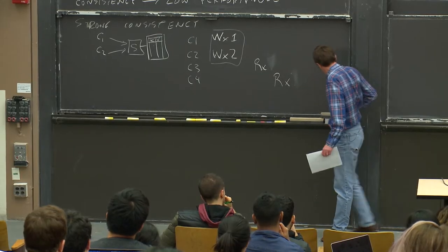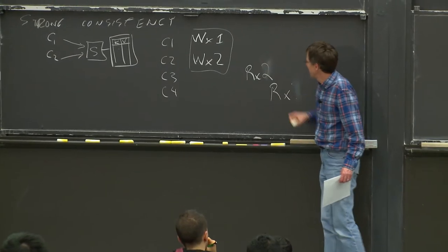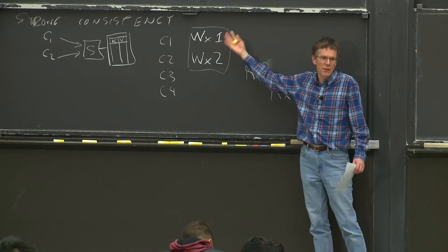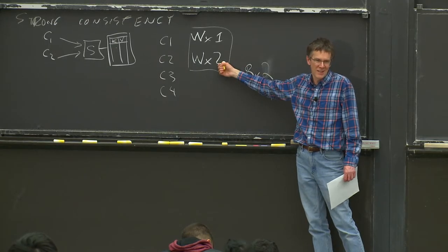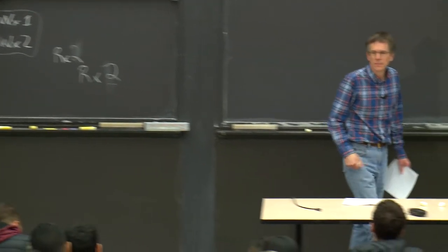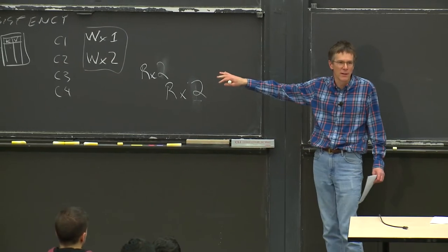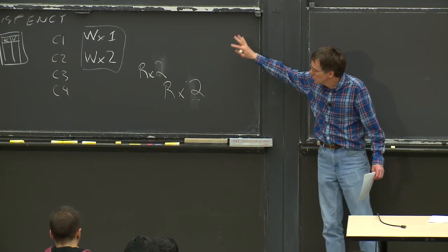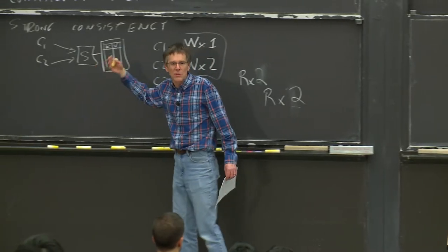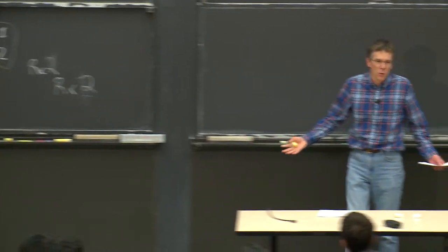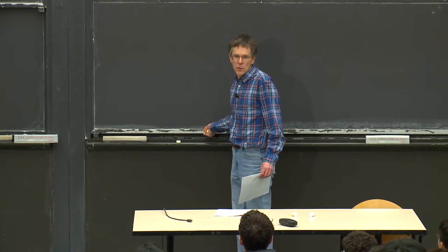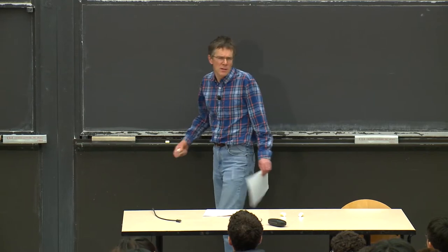If client three sees a two, then client four had better also see a two, because our model says after the second write it still has to be the second write when client four reads. This is supposed to be the intuitive model of strong consistency. The problem is that a single server has poor fault tolerance — if it crashes or its disk dies, we're left with nothing. So in the real world of distributed systems, we actually build replicated systems, and that's where problems start leaking in when we have a second copy of data.